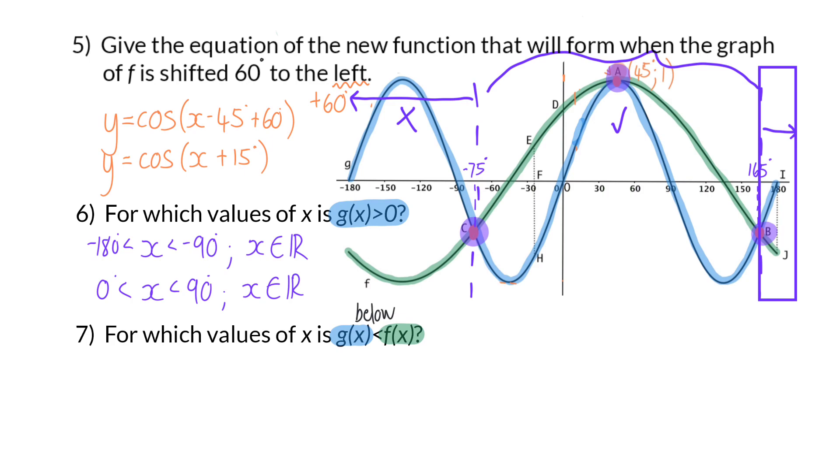Our final answer then only consists of the middle interval, and that will be all the x values in between point c and b, with c and b excluded, because the two graphs cannot be equal to each other. Then we also need to focus on point a.